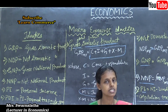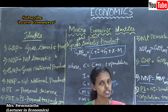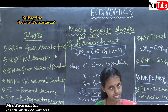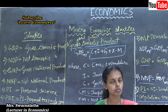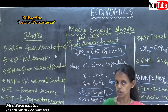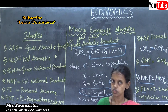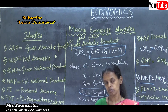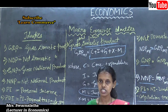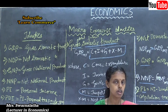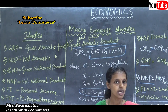GDP means Gross Domestic Product — gross means total, domestic means internal. Total internal product produced in a country during a year is said to be the Gross Domestic Product. In the next class we are going to discuss the different methods to calculate national income: income method, expenditure method, and product method.